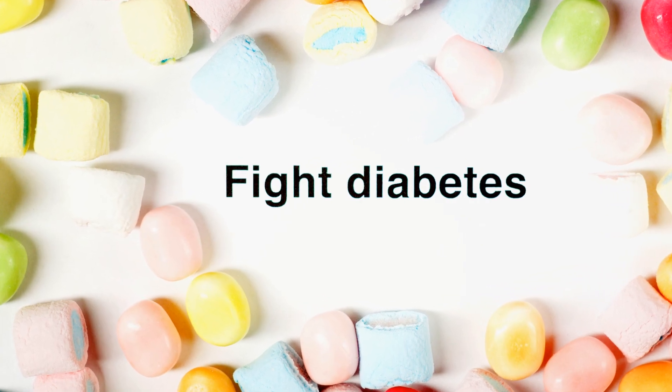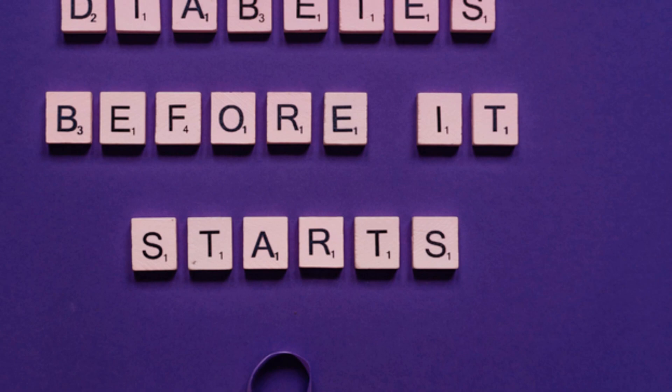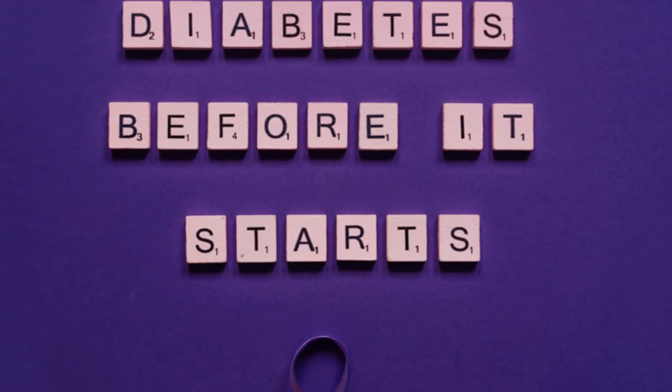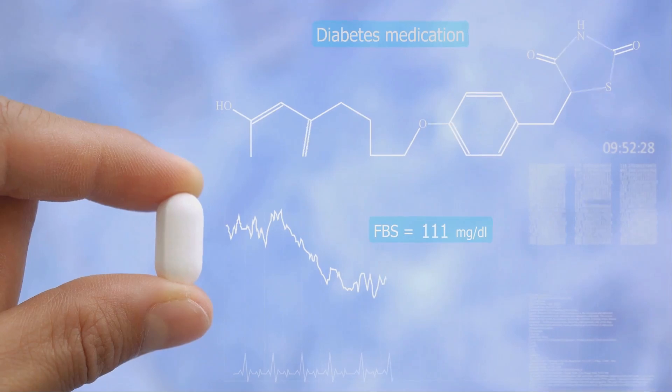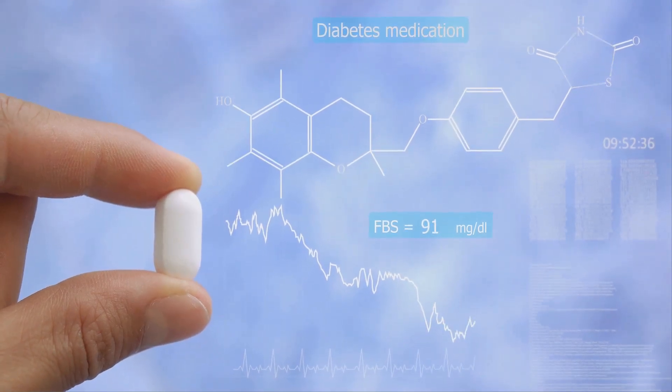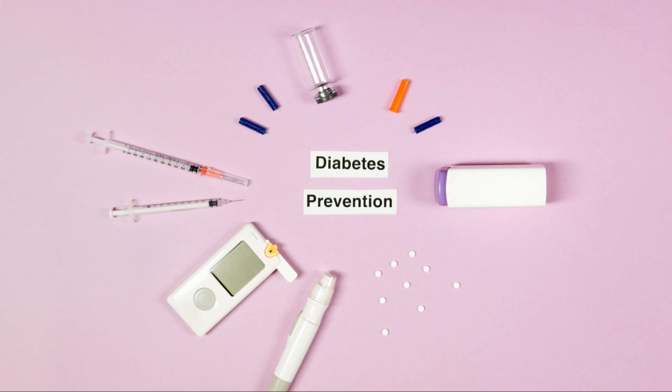Weight management is another crucial strategy. Excess weight, particularly around the abdomen, is associated with insulin resistance. Thus, maintaining a healthy weight can improve insulin sensitivity. This strategy comes with numerous health benefits, but it can be challenging for some individuals to achieve and maintain.